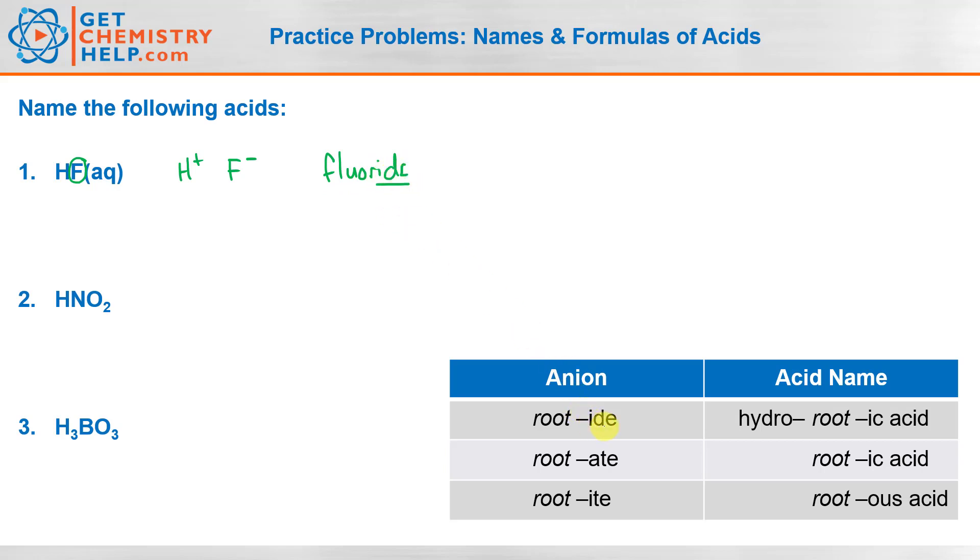we're going to look down here and that tells us that the acid name begins with hydro and the ending is changed to ic acid. So fluoride becomes hydrofluoric acid. So you can see that the Ide here told me to put hydro on the front and ic acid on the end. But the root, the fluor, stayed the same. So fluoride became hydrofluoric acid.